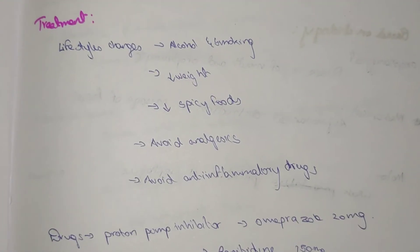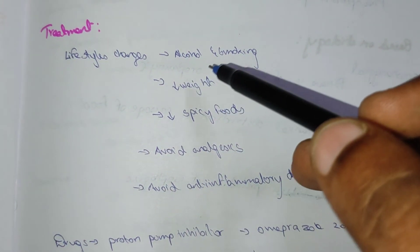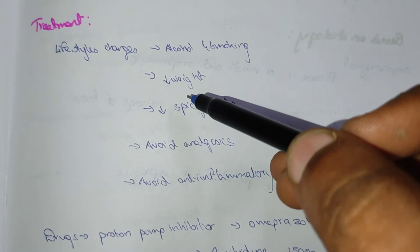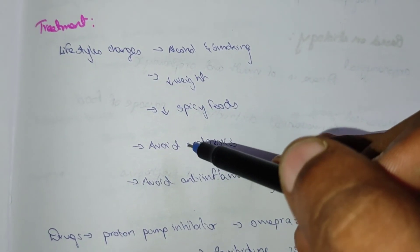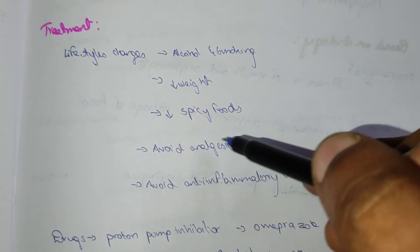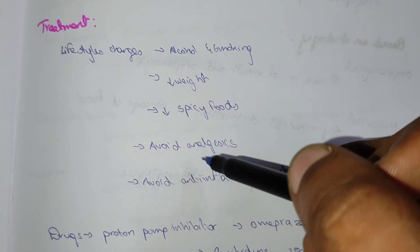Now we will see the treatment. The lifestyle changes: you should quit the alcohol and smoking habit, you should decrease the weight and decrease the intake of spicy foods, avoid analgesics. Due to drugs also, this disease might come. Avoid anti-inflammatory drugs.